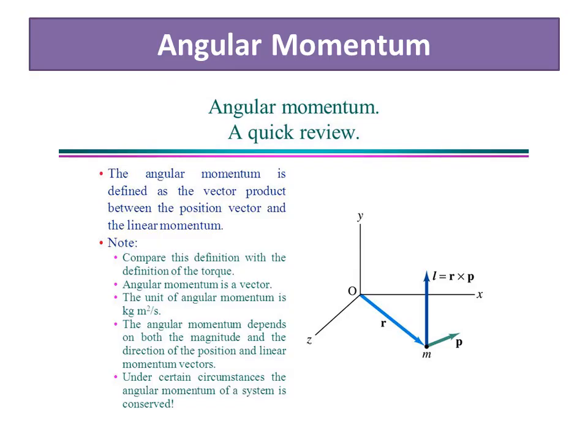Now we have angular momentum. Angular momentum is defined as the vector product between the position vector and linear momentum. In the XYZ coordinate system, with origin O as the reference point, the position vector goes from O to the mass M. When the body is moving, it has mass and therefore momentum P.